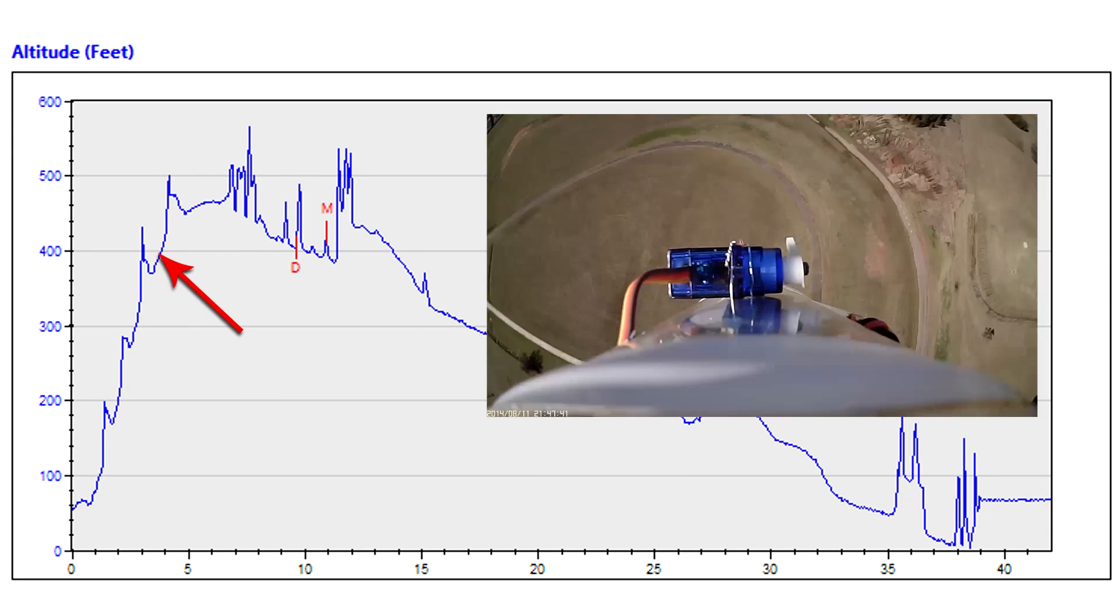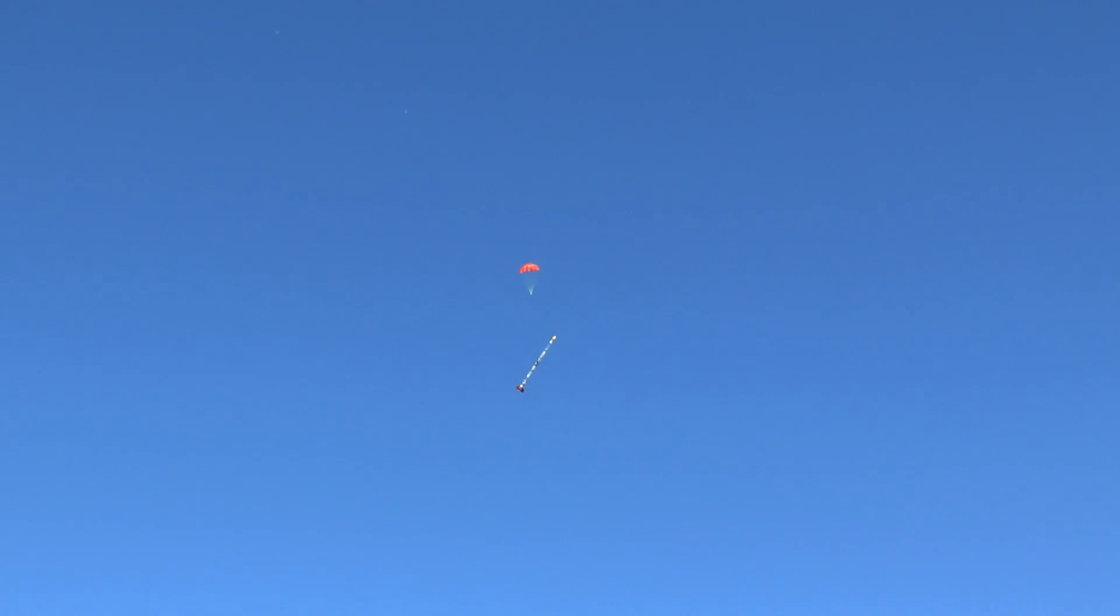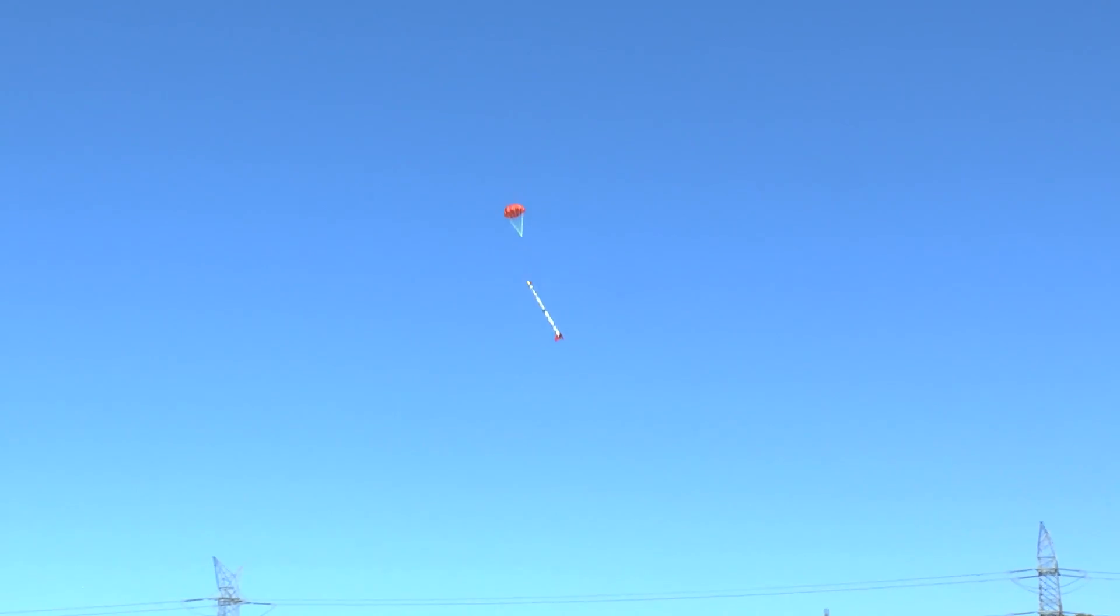It didn't take long to figure out that it was the sun shining on the barometric sensor through the clear fairing. Although the sensor is under the board light was still getting in from the side.